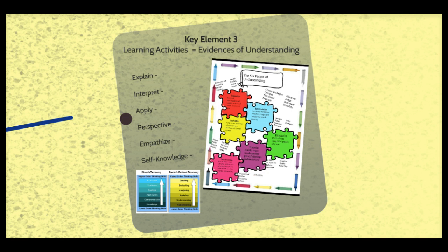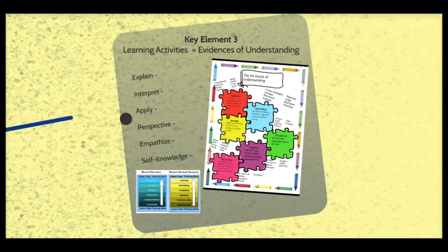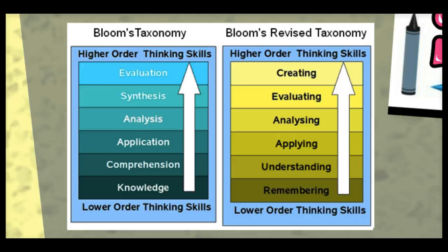When it comes to the third key element of Understanding by Design — the evidences of understanding — think Bloom's taxonomy. In 1956, Benjamin Bloom headed a group of educational psychologists who developed a classification of pyramid-style levels of intellectual behavior important in learning. In the 1990s, a new group of cognitive psychologists led by a former student of Bloom's, Lauren Anderson, updated the taxonomy to reflect relevance to 21st century work. The original Bloom's levels moved upward from knowledge, to comprehension, to application, to analysis, to synthesis, and finally to evaluation, constructed with nouns.